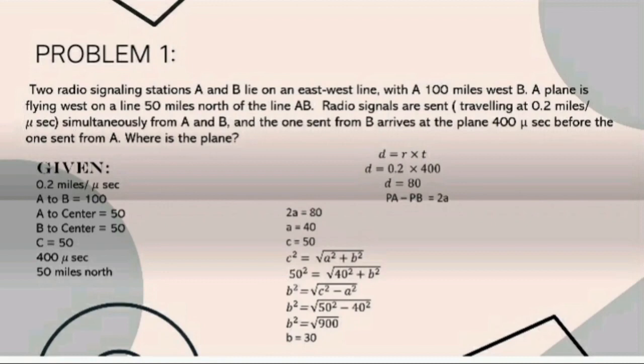Distance equals rate times time. Our rate is 0.2 and our time is 400, so D equals 80. PA minus PB equals 2A, so 2A equals 80. You just need to divide both sides by 2 to get A, so A equals 40. And C equals 50.